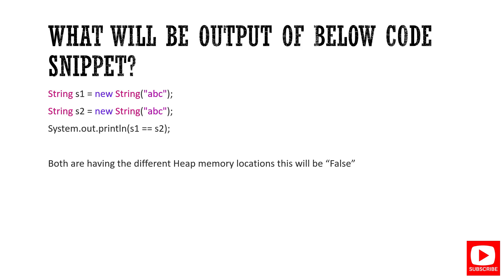Next question: what will be the output of the below code snippet? We have two different object creations. Even though the same string value is used, the heap memory locations are different, so the comparison result will be false.